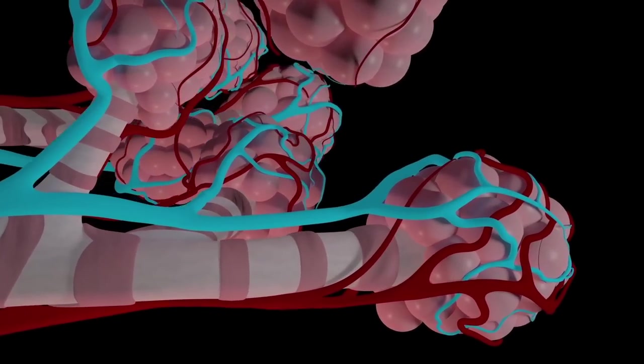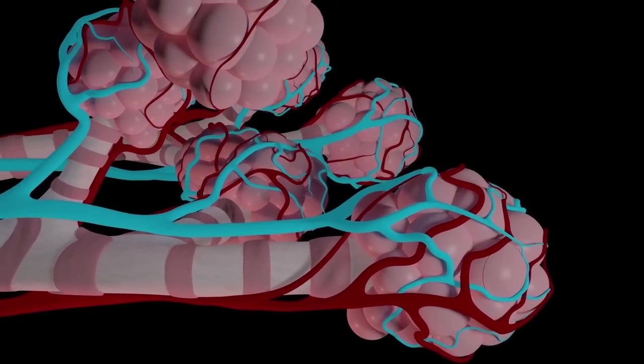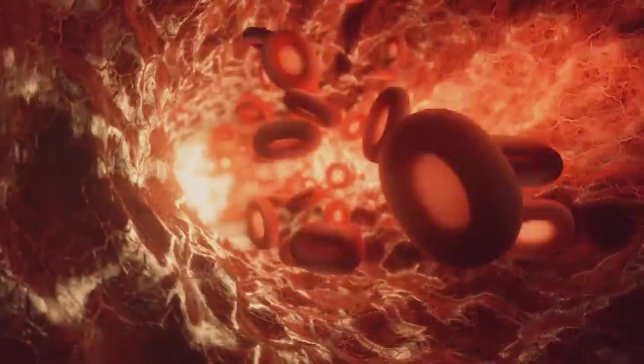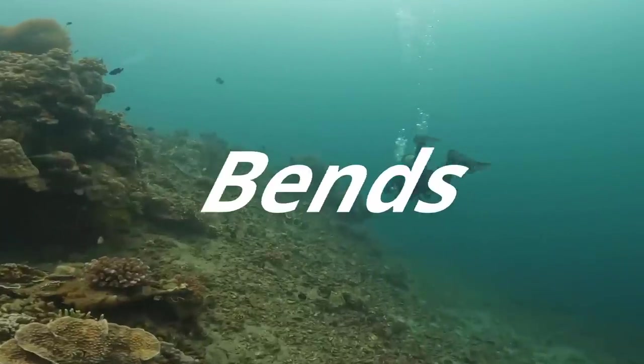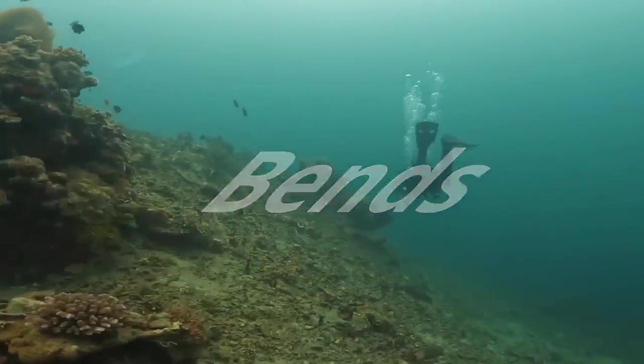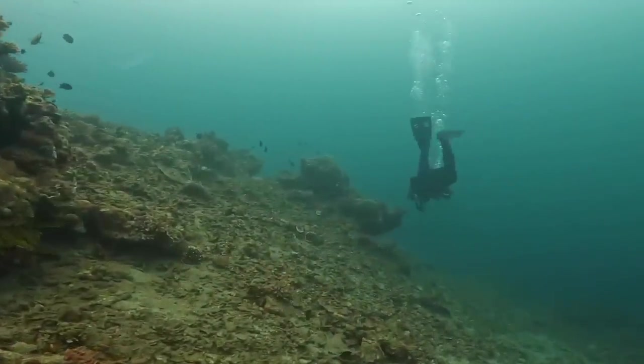This collapse of their lungs also prevents gas exchange at the alveoli, thus preventing nitrogen from entering the bloodstream, which would result in the infamous bends, which human deep-sea divers experience if they rise from great depths too quickly.